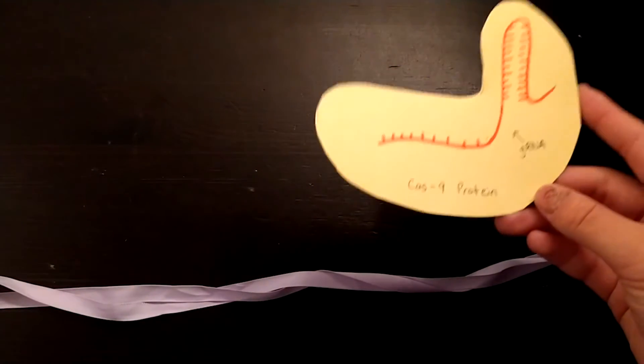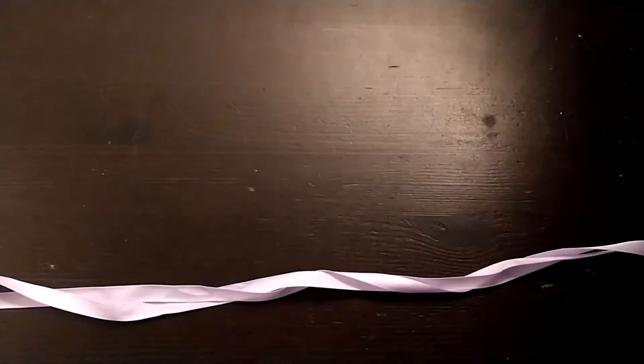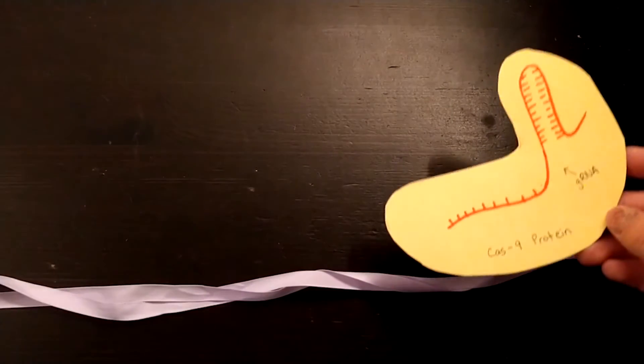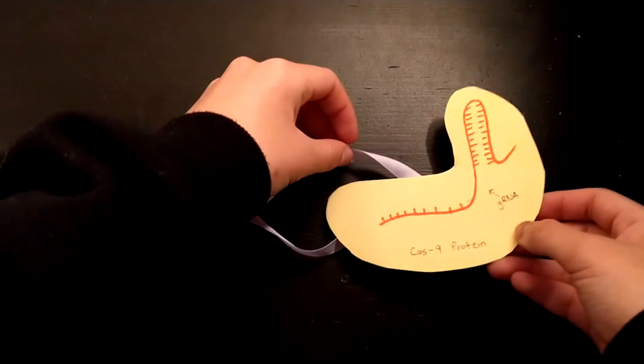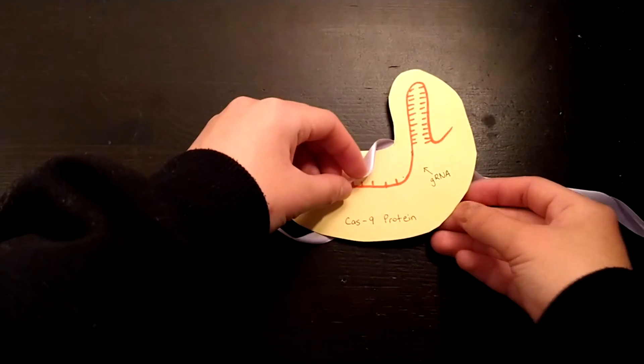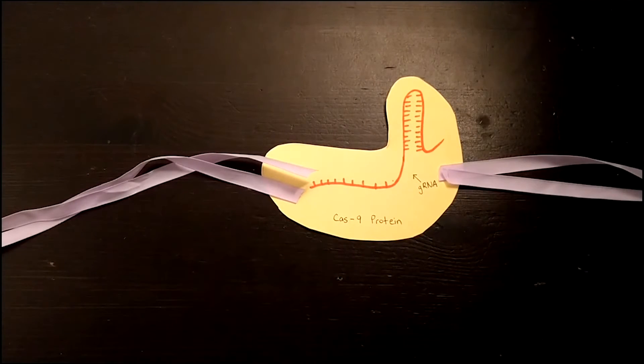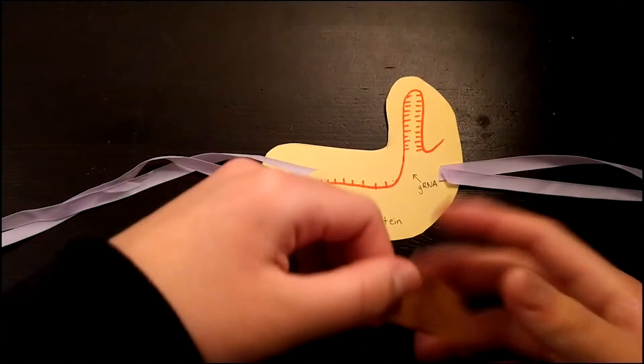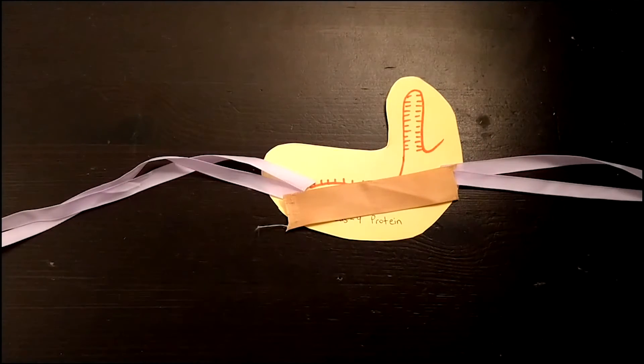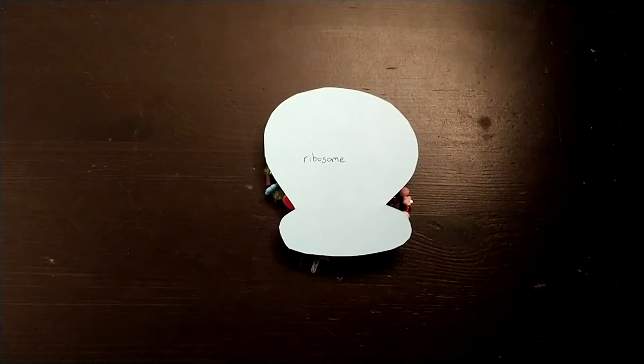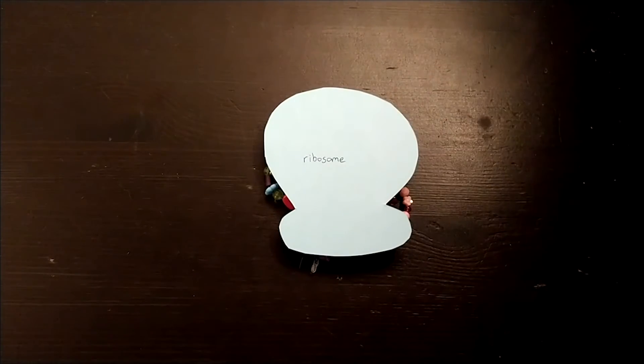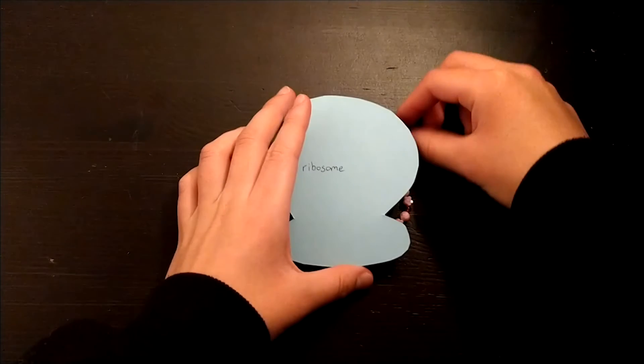Cas9 is a protein that contains a guide RNA, and Cas9 will search along the genome of the bacteria to find a specific place where it matches with the guide RNA. At this specific spot, CRISPR will cut at the site that matches the gRNA, and through homologous recombination, a new template strand of DNA is inserted. Now with the change in one amino acid, streptomycin can no longer bind to the ribosome and it can successfully make proteins.